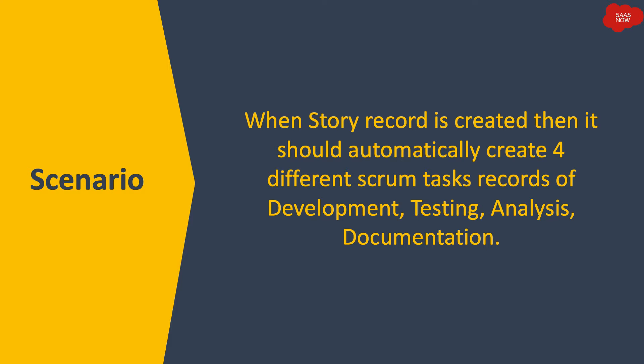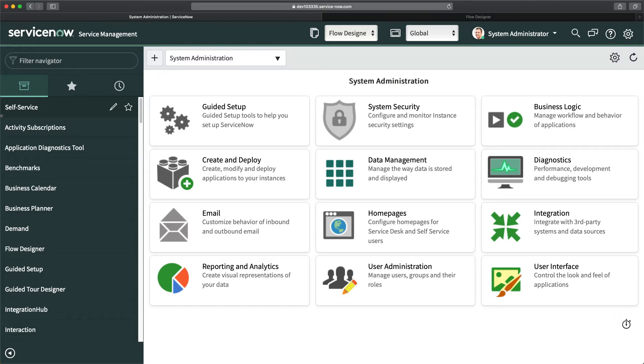If you remember, in one of our practical use cases we talked about a scenario where we created four scrum tasks when a story is created. When a story is created, it should automatically create four different scrum task records: Development, Testing, Analysis, and Documentation. We achieved this requirement with the help of a business rule that included a script.